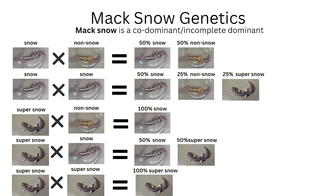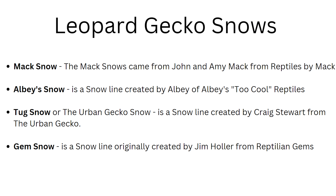Now you know everything about snow — well, we only talked about the max snows. There are also different lines of snow: albies, tugs, and gem snows. Max snows are the ones that are more common and much cheaper than the others. But if you want to know how the other snow lines work, we can make a video about that in the future.